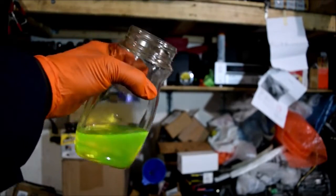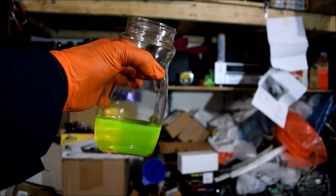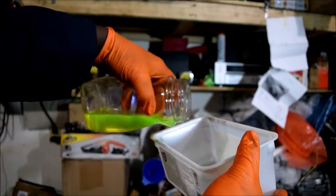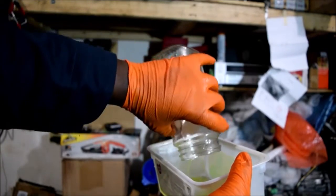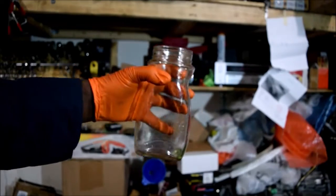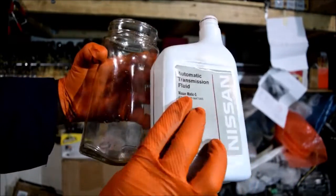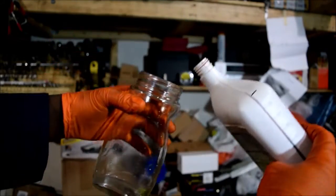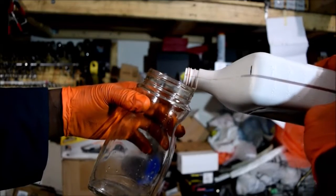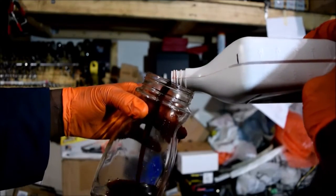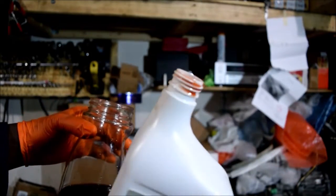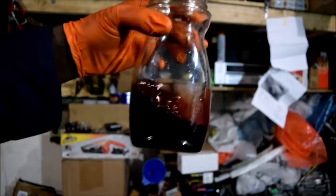We're going to pour this coolant out, then pour transmission fluid into it, and then we can see what happens. This is the Nissan Matic S transmission fluid. It's supposed to be as pink as can be, but it's spent, so there's a little brown hue to it. It is pinkish.